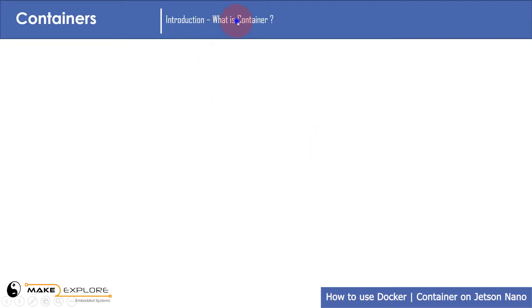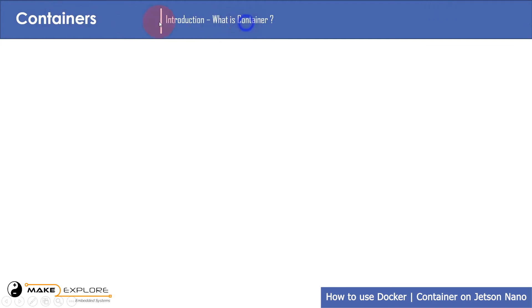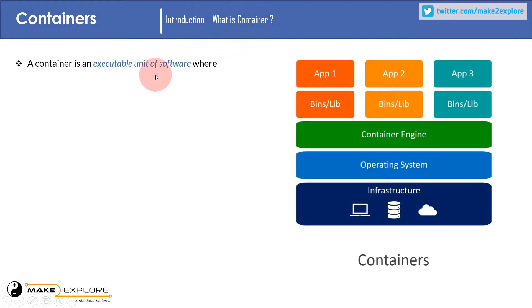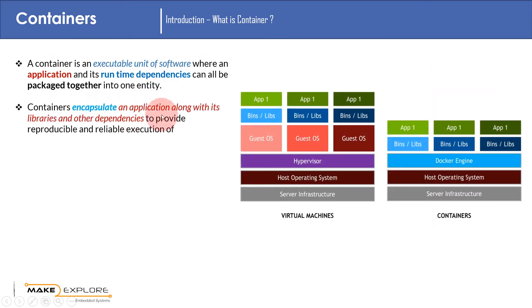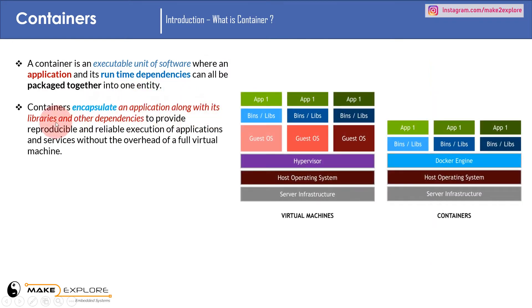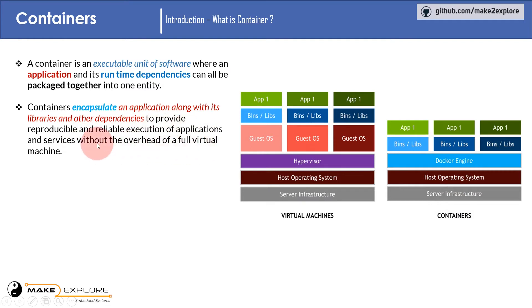Let us see what is meant by a Docker container, Docker image, and NGC cloud. Over the last few years there has been a dramatic rise in the use of software containers for simplifying deployment of data center applications at scale. A container is an executable unit of software where an application and its run-time dependencies can all be packaged together into one entity. Containers encapsulate an application along with its libraries and other dependencies to provide reproducible and reliable execution without the overhead of a full virtual machine.